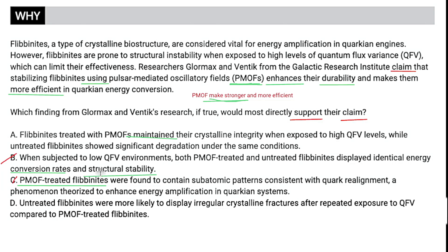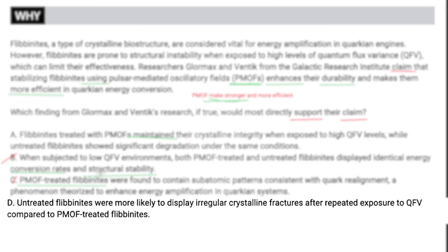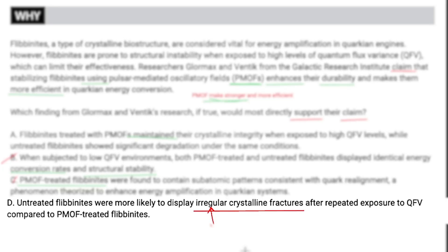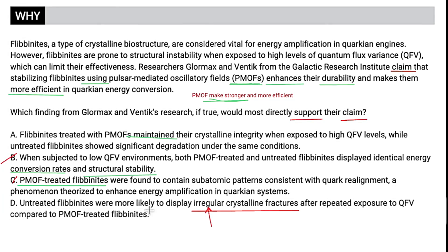Choice D: the untreated phlebs were more likely to display irregular crystalline fractures after repeated exposure compared to PMOF-treated phlebs. This one is comparing untreated to treated, and it seems like it's saying they're stronger. However, the word 'irregular' weakens this answer — it's not saying they were more likely to display fractures (which would mean they're not as strong), but rather irregular fractures. If the fractures just aren't quite as uniform, that doesn't necessarily mean they were actually not as strong. So I'll get rid of D, and our answer is going to be choice A.